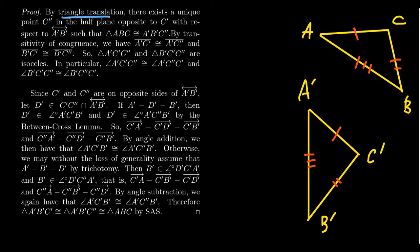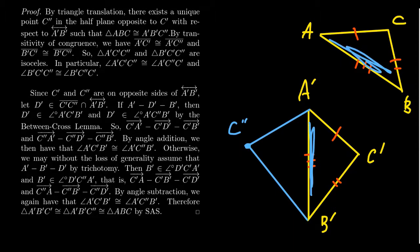By triangle translation, there's going to exist some point C double prime, on the opposite side of the line A'B' that C prime is on — so these points are on opposite sides. We can translate the triangle ABC onto the segment A'B', and we can do that because A'B' is congruent to AB. So our triangle ABC, by translation and by construction, is going to be congruent to the triangle A'B'C double prime.